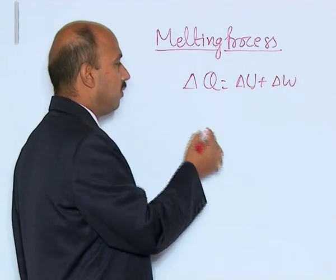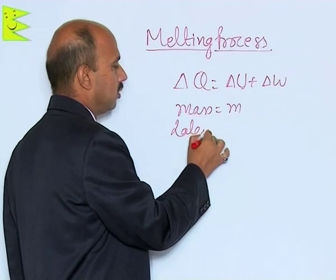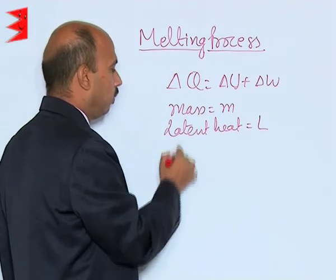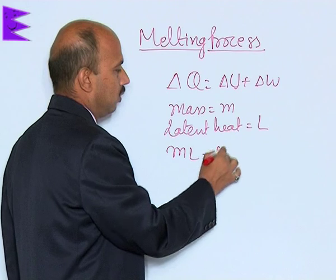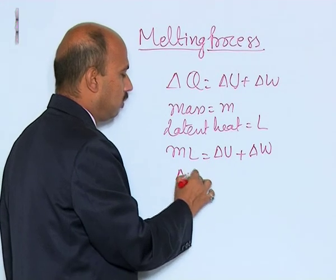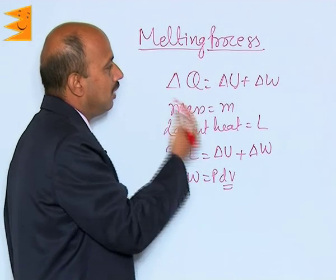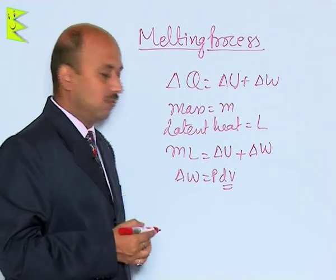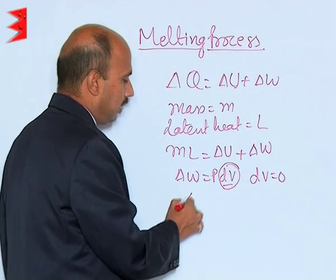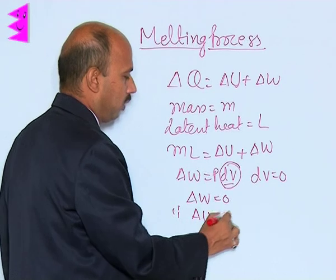Now, if the mass of ice is M and the latent heat is L, we can write M into L is equal to delta U plus delta W. But in the melting process, when ice melts into liquid, there is a very small change in volume. So dV is equal to 0, and therefore delta W is equal to 0. Therefore, delta U is equal to M into L.